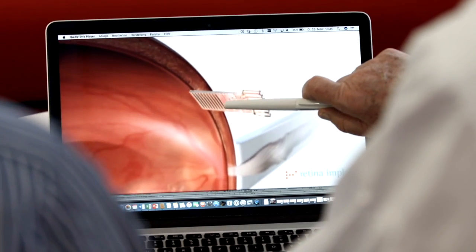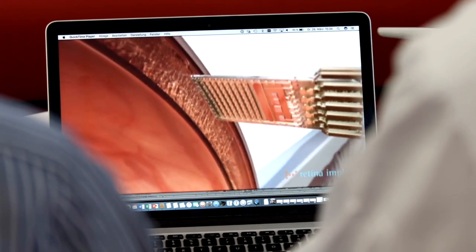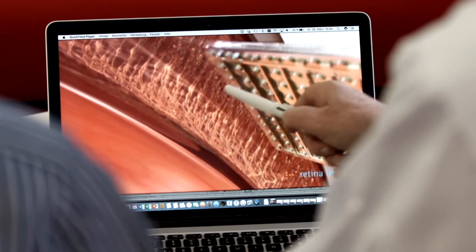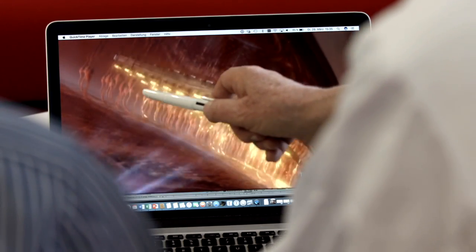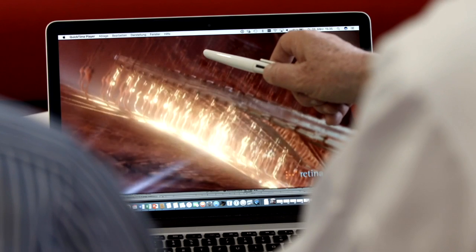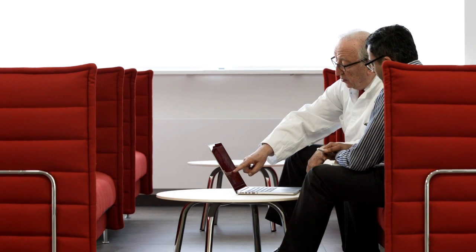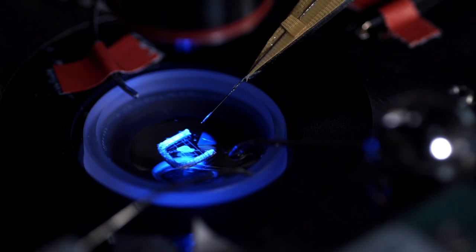There are 1.1 billion people with visual impairments worldwide. Of these, 43 million are blind and 295 million are severely visually impaired. Many people assume that retinal implants are about regaining 100% vision. However, this is rarely the case.